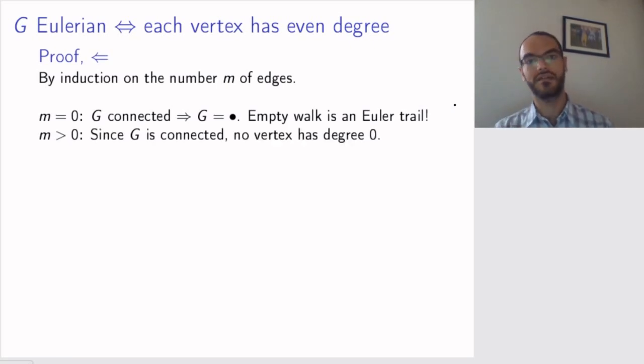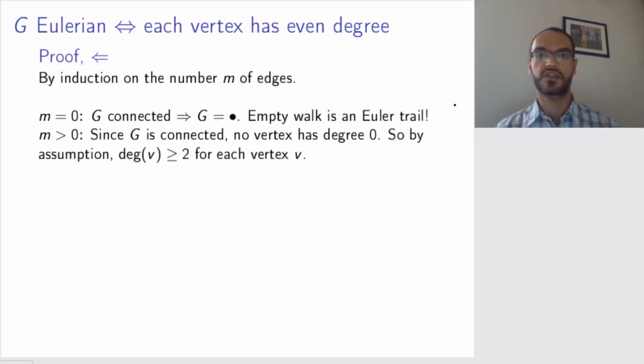Now let's take the inductive step. Assume that you have a connected graph where the number of edges is positive. Since the graph is connected, there is no vertex that has degree zero. There are no isolated vertices. So each vertex has to have degree at least one. But since you're assuming that the degree is even, in fact, each vertex has to have degree at least two.